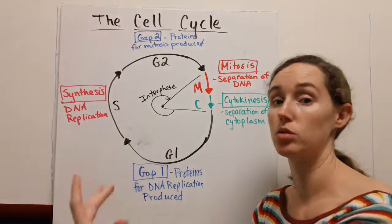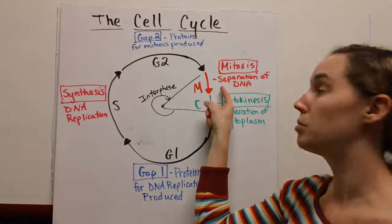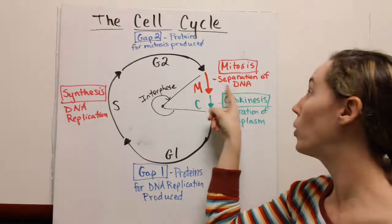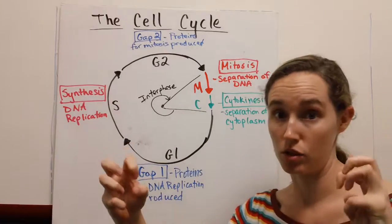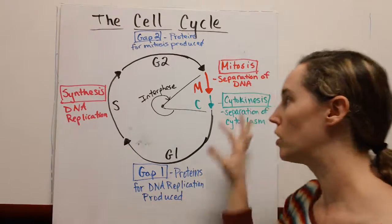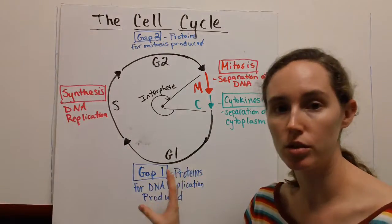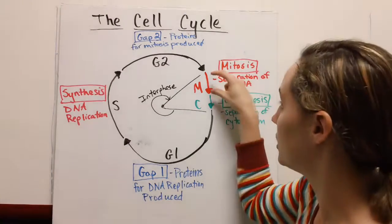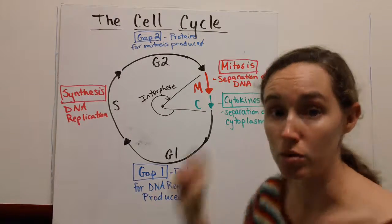We've got some more growth. Once all these three steps of interphase are complete, your cell is going to move into mitosis. Mitosis is simply the part of the cell cycle where your DNA gets separated from each other.